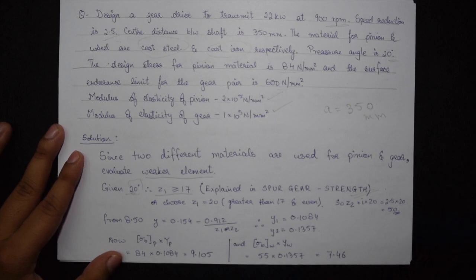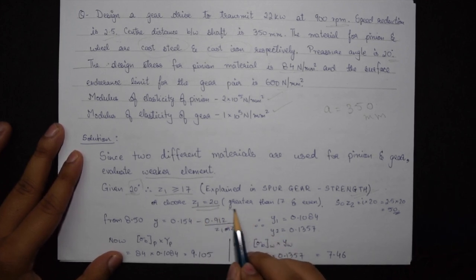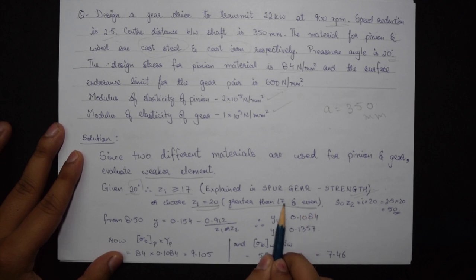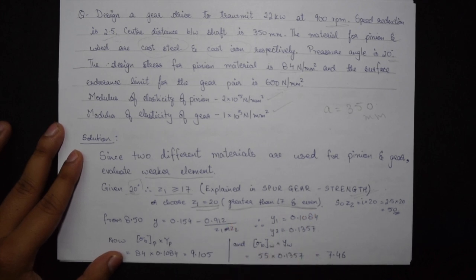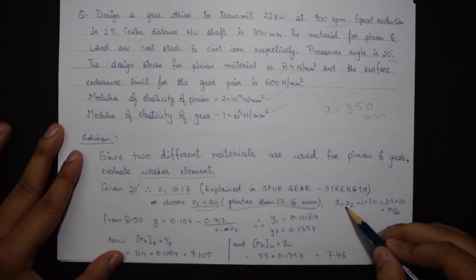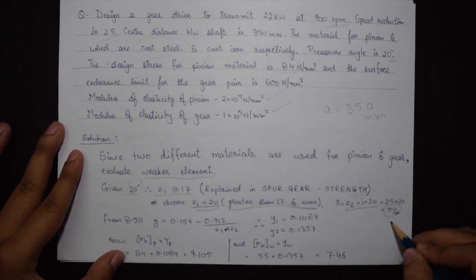So we choose the value Z1 equal to 20 because it should be greater than 17 and an even number. So the value of Z2 becomes I into 20 or 2.5 into 20, that is 50.